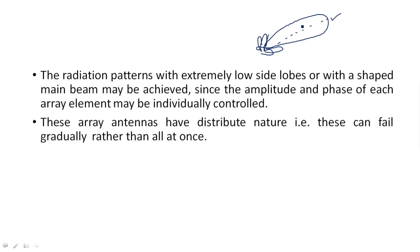The array elements have a distributed nature, meaning they can fail gradually rather than all at once. For example, if you have a single dish antenna at home and it fails, the signal is completely lost. But in phased array antennas, we have n number of antennas grouped together — if one antenna fails, it does not mean the entire system fails; the remaining antennas continue working.